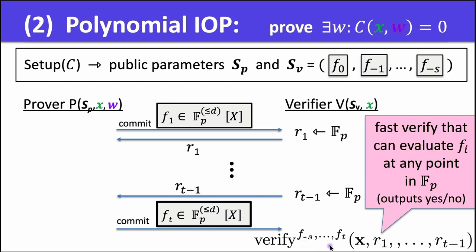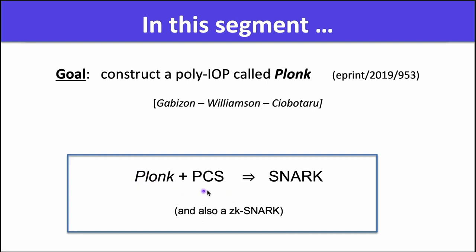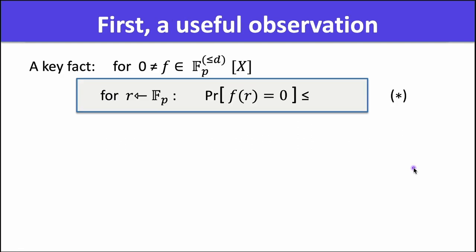Now in the last segment we saw several polynomial commitment schemes. The KZG one is the most widely used in practice, but there are others with different properties. Once we have a PCS, we can combine it with a polynomial IOP to obtain a SNARK. A polynomial IOP is a way to prove that the prover knows a witness w such that C(x,w) = 0. The poly IOP pre-processes the circuit C to generate prover parameters, and the verifier parameters are commitments to a number of polynomials.